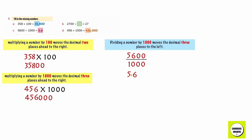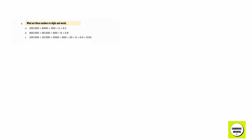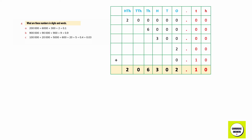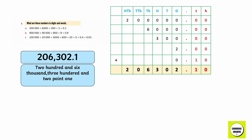2,700 divided by 100 gives you 27. Question number four — Write these numbers in words and digits. 200,000 + 6,000 + 300 + 2 + 0.1 gives you 206,302.1.